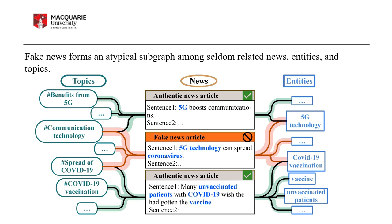In the example provided, the subgraph rooted in the fake news comprises the rarely related entities 5G and COVID-19, along with the topic spread of COVID-19.